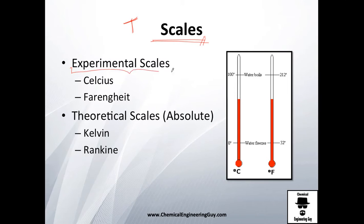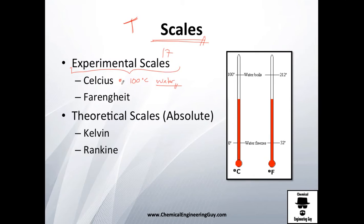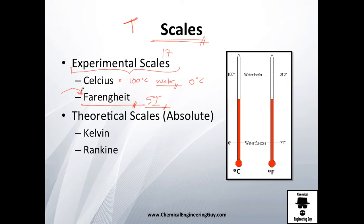The first scales came around the 1700s. The Celsius scale is the one we commonly use; it makes sense because it's based on water, a unique and widespread material. Zero Celsius is the freezing point and 100 Celsius is the boiling point. Then there's the Fahrenheit scale, which doesn't align as neatly with SI units.